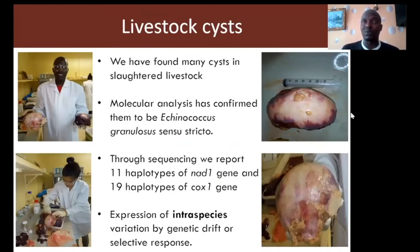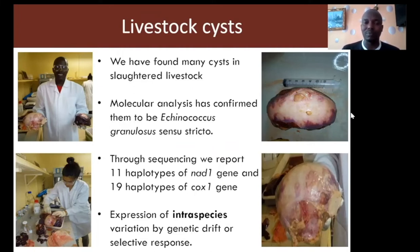We have found many cysts in slaughtered livestock. We conducted molecular analysis on these cysts and confirmed all of them to belong to Echinococcus granulosus sensu stricto, which is the sheep strain of the parasite, but now found in different other species and cattle in our case.